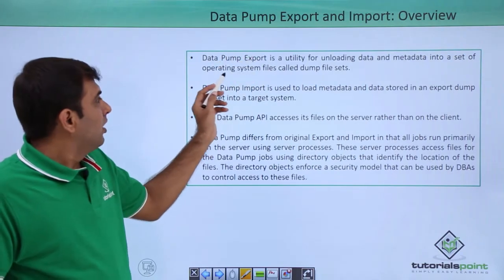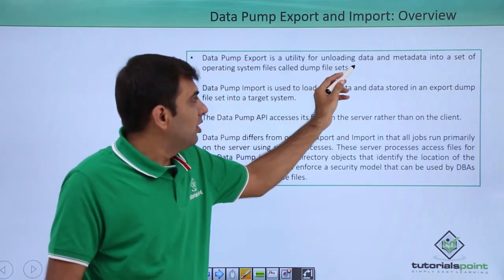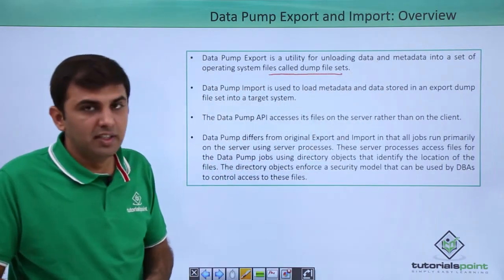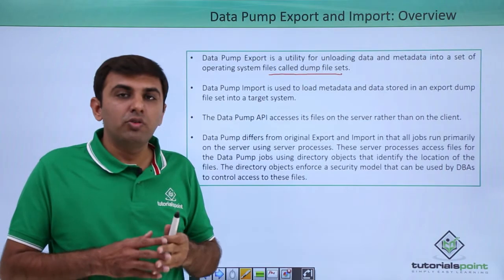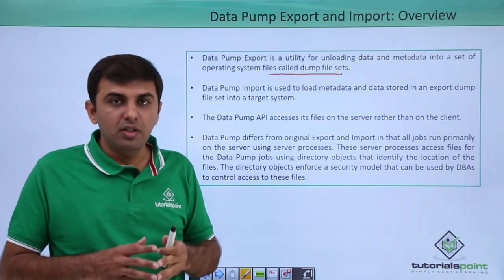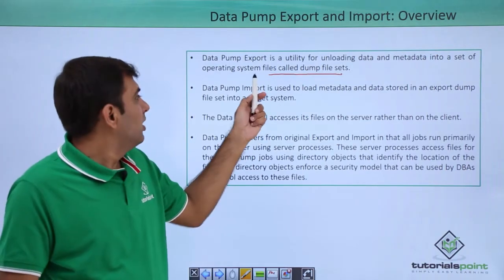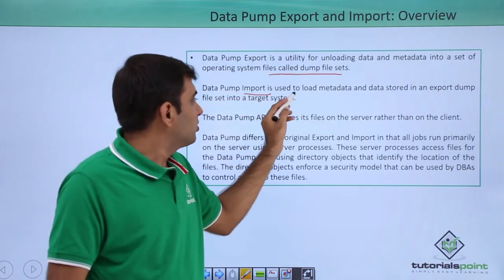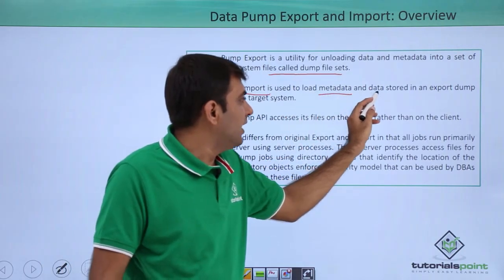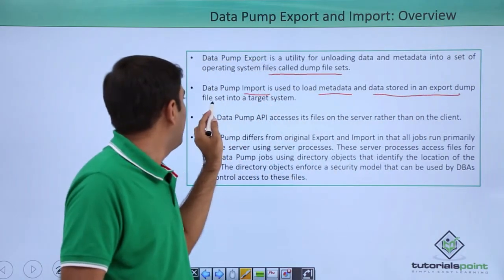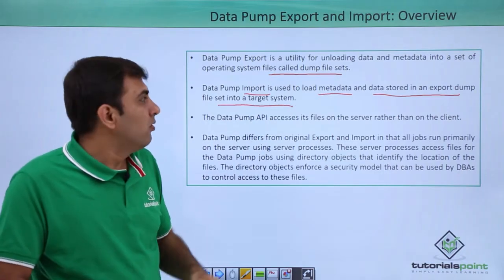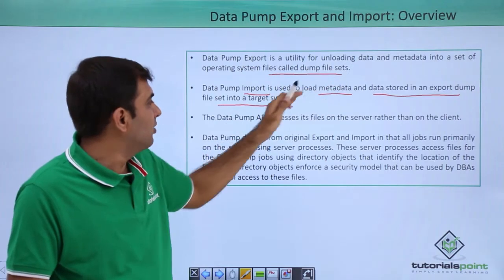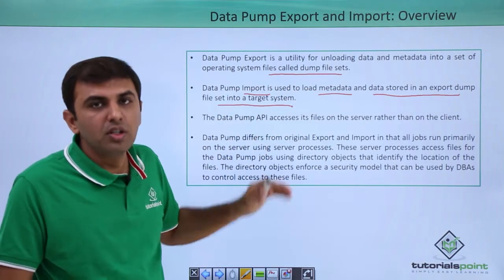Data Pump export is a utility for unloading data and metadata into a set of operating system files called a dump file set. Whatever data you want to export from a table, you can export it into the dump file set. Data Pump import is used to load the metadata and data stored in the export dump file into the target system. Whatever files you exported using the Data Pump export operation into the dump file set can be used for import purposes.